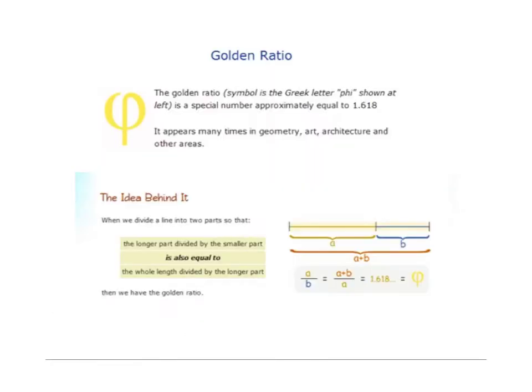Okay, this is the next place where you probably want to take notes. And we're going to talk about something called the golden ratio. The golden ratio, and this is the Greek symbol Phi, shown at left, is a special number approximately equal to 1.618.